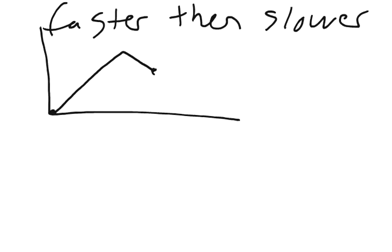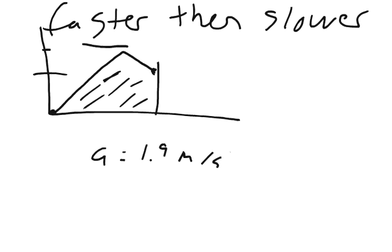We want to know what this velocity is right here at this point, and we want to know what the area is under this curve to know the total distance traveled. So in order to do this, we need to first find our final velocity. We know that the acceleration was 1.9 meters per second squared, and the formula for acceleration is v final minus v initial divided by change in time.